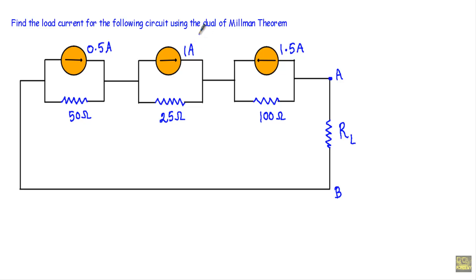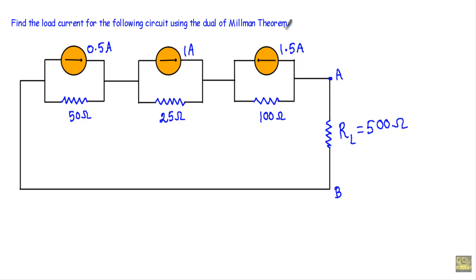In this video I will show you an example of the dual of Millman's theorem. We will find a load current for the following circuit using the dual of Millman's theorem. We have R_L equal to 500 ohm and we have to calculate the current through this R_L. If I consider this 0.5 ampere current source as...